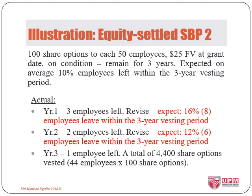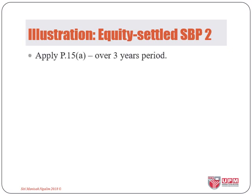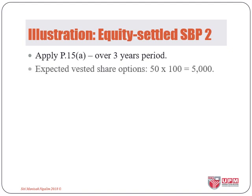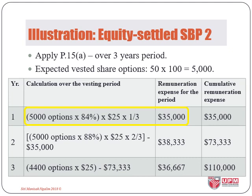In year three, the prediction was correct — only one more employee left, so the company will reward only 44 remaining employees. For year one, we expect to reward options to 42 employees or 84% of the total at $25 for one-third of the vesting period. In year two, we expect to reward 44 employees or 88% at $25 for two-thirds of the vesting period, but we already recognised $35,000 worth of expense, so we deduct that, giving only $38,333.